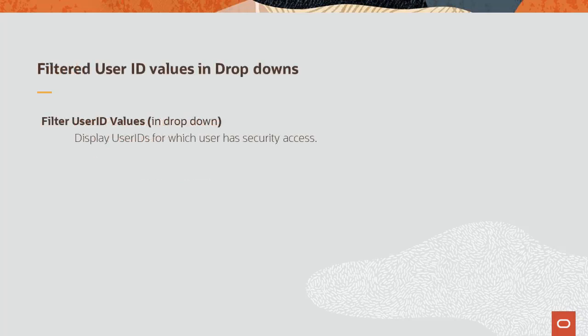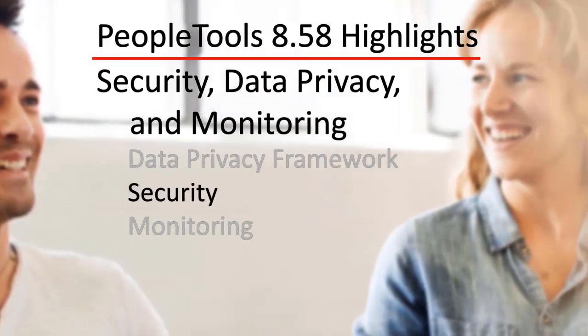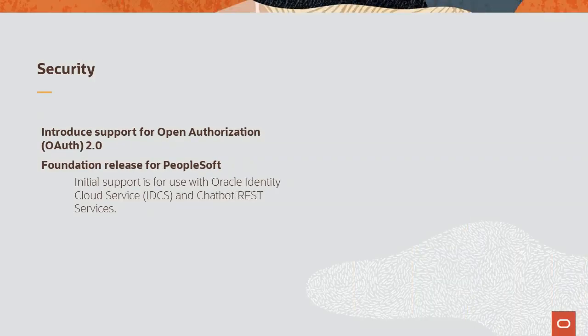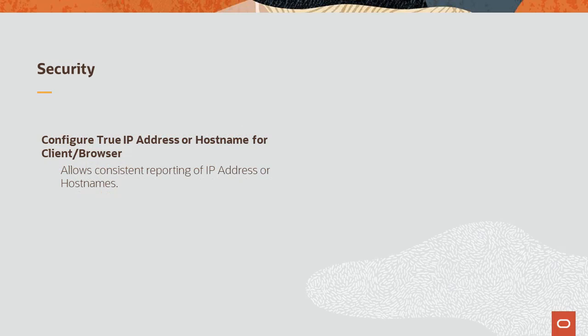The Filter User ID Values in Dropdown feature enables you to display only those user IDs in the dropdown for which the user has security access; the masked data disguises the original data link. PeopleTools now supports Open Authorization, or OAuth 2.0. With OAuth, an end user's account information can be used by third-party services without exposing the user's password. This is a foundation release for PeopleSoft, so the initial support is for use with Oracle Identity Cloud Service and Chatbot REST services. In addition, PeopleTools 8.5.8 provides consistency in login client IP addresses versus host names, making it possible to configure which exported type IP addresses are being reported as an individual browser IP.